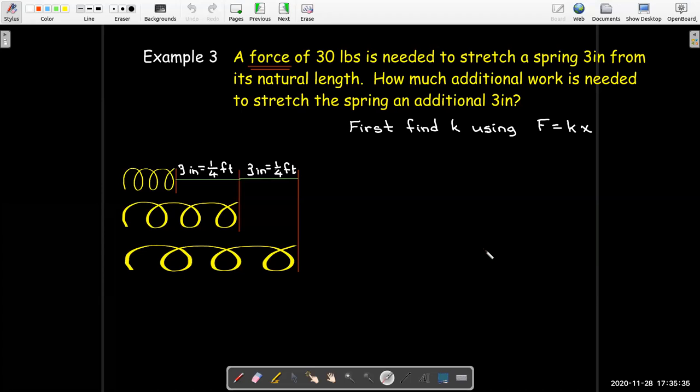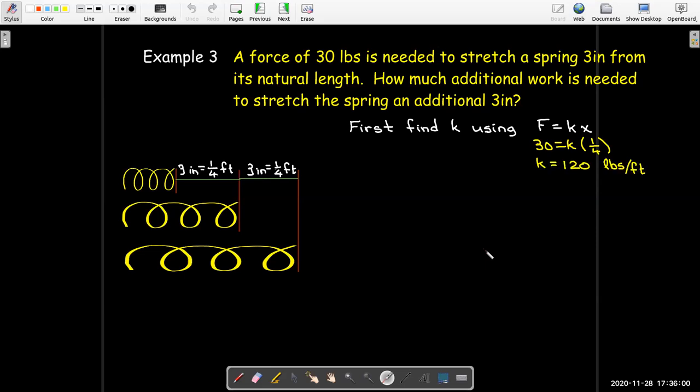So, it's not work. It's not telling us how much work is used. It's just telling us the force that's needed. So, we can go back to Hooke's Law, and F equals kx. We can put 30 in the place of F, 1 fourth in the place of x. Again, we're converting everything to feet here. So, 3 inches is a quarter foot. And that tells us that the spring constant is 120 pounds per foot.